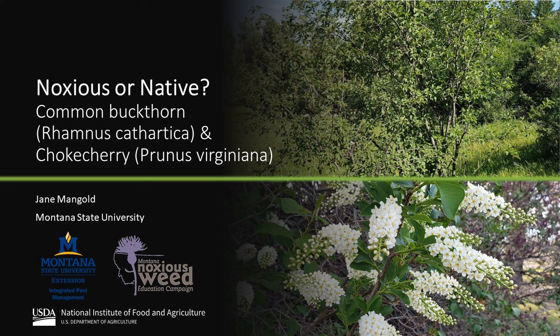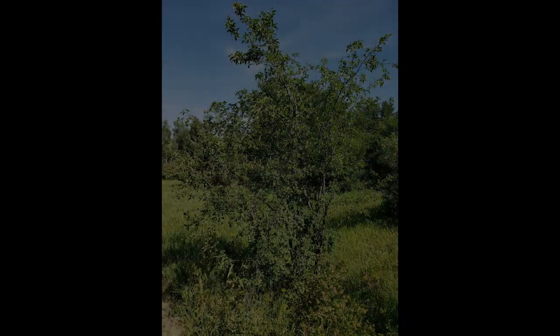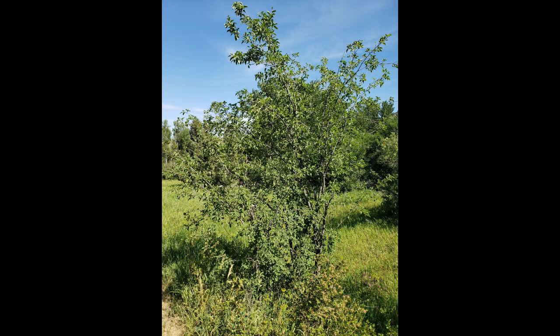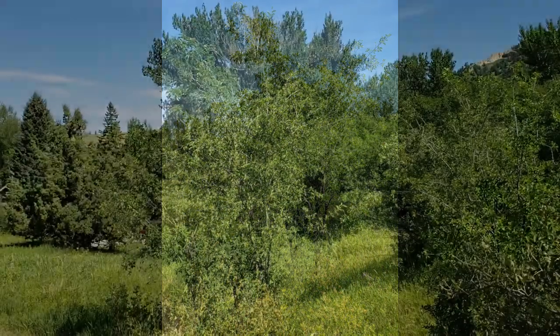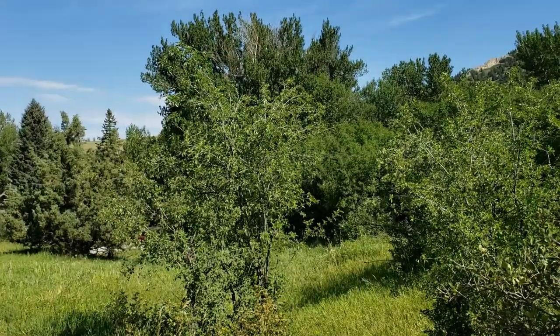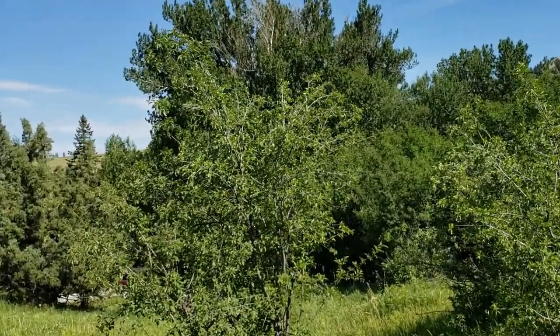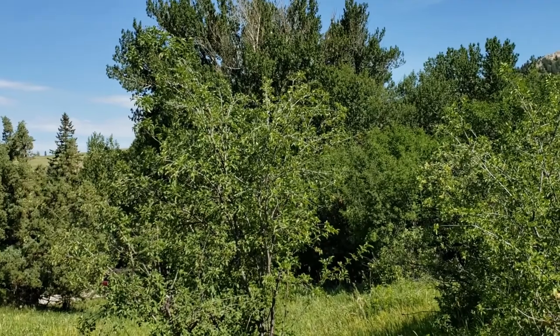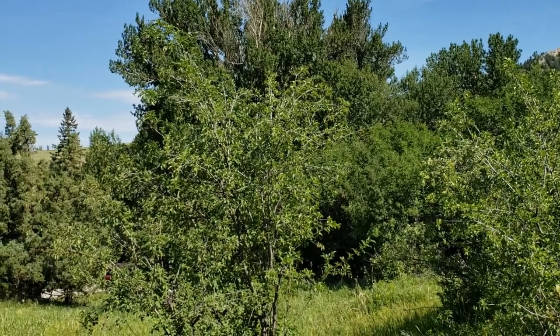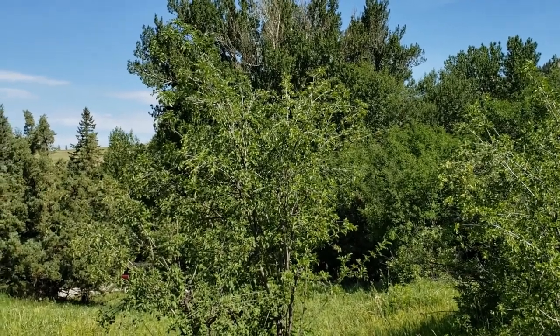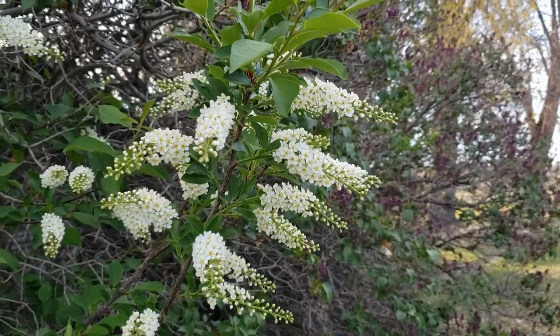Common buckthorn, Rhamnus cathartica, is a woody shrub or small tree on the Montana Noxious Weed List. It grows in deciduous forests and is most common in urban areas and nearby woodlands. Its habitat overlaps that of chokecherry, and the two species can be confused with each other.